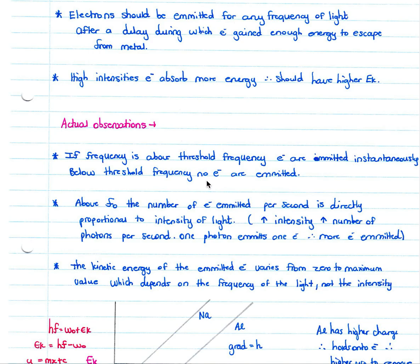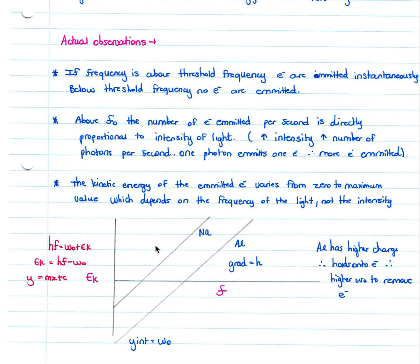If you have a metal with a threshold frequency and your light is above that threshold frequency, you will have an immediate emission of electrons. If the frequency is below the threshold frequency, there will be no emission. If you are above the threshold frequency, the number of electrons emitted per second is directly proportional to the intensity of light — more intensity means more photons per second, one photon emits one electron, so more electrons are emitted. The kinetic energy of the emitted electron varies from zero to a maximum value, which depends on the frequency of the light, not the intensity.